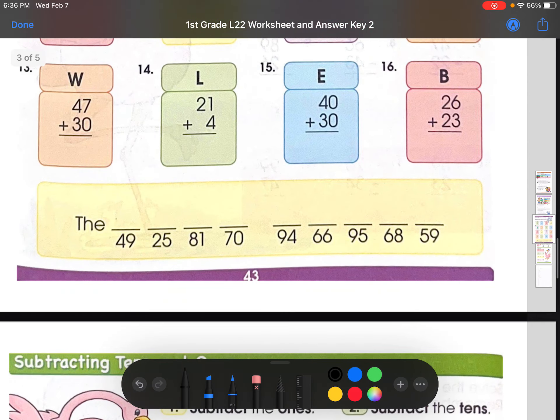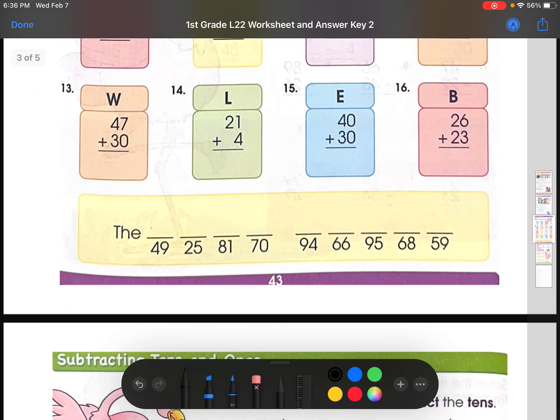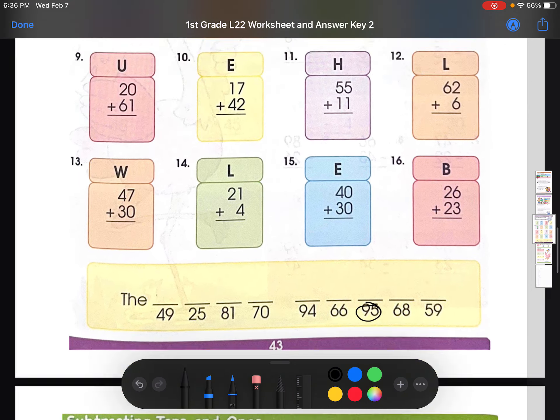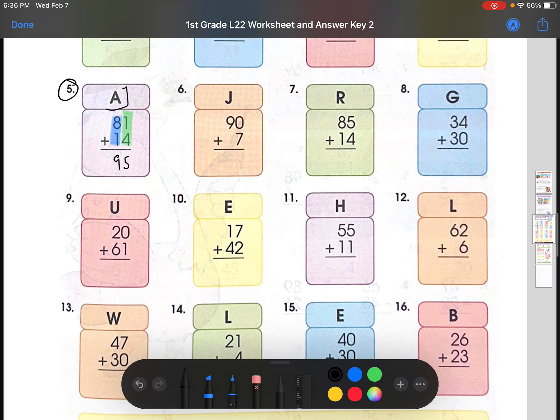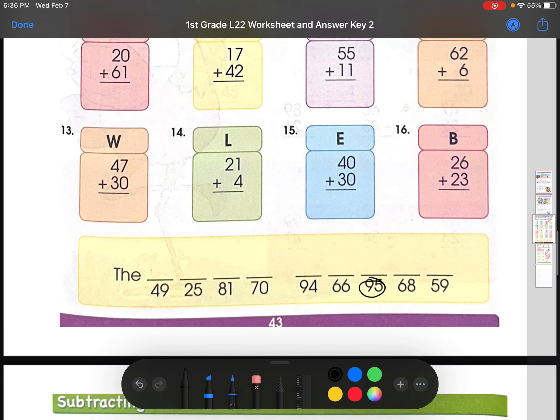Now you can come down here and check. Is there 95? Yes, there is, right here. So that means that this letter corresponds to 95. So at 95, you could put A.